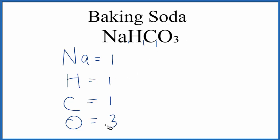So if you wanted to know how many atoms there were in NaHCO3, you'd add these numbers up. Three plus one plus one plus one. That gives you six atoms in baking soda.